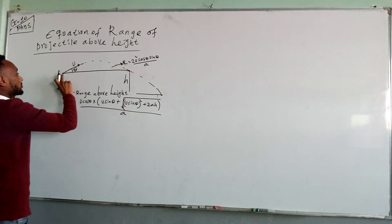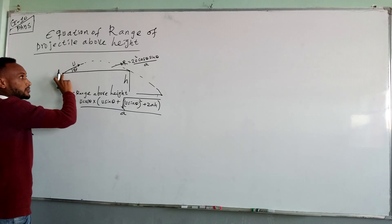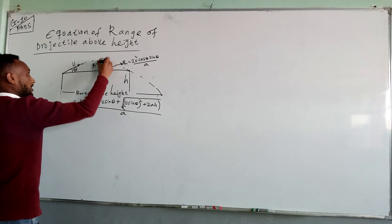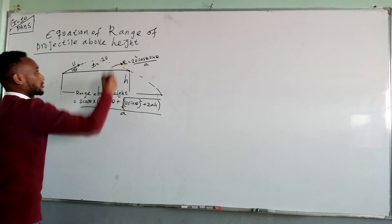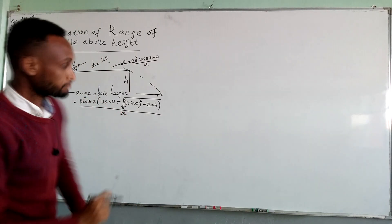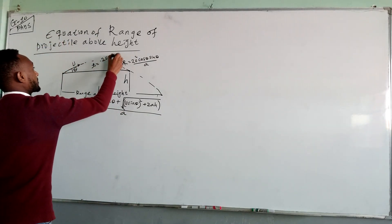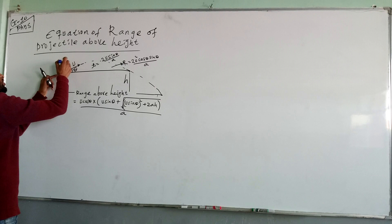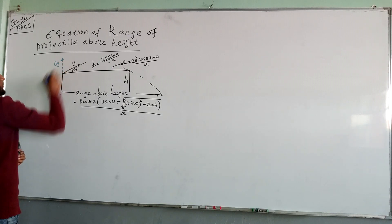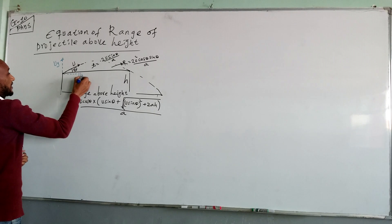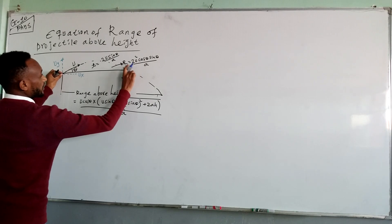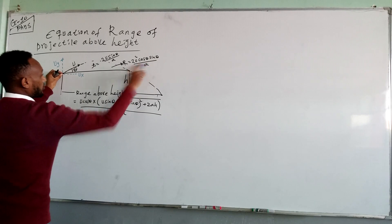The time taken from the starting point up to the landing point is the time of flight, which is equal to 2u sin θ over a. Initially, the body is projected at angle theta. We resolve it into its components: the vertical component is uy = u sin θ and the horizontal component is ux = u cos θ. For this projectile motion only, we have a range equal to 2u² cos θ sin θ over acceleration.